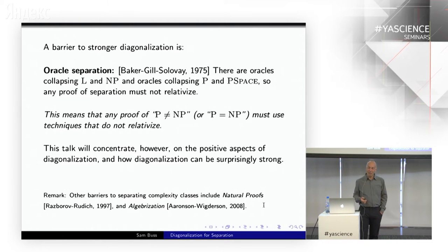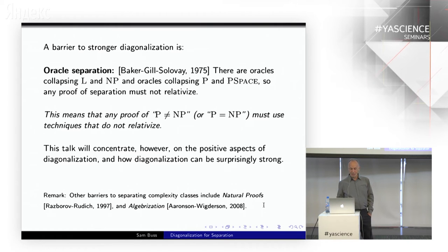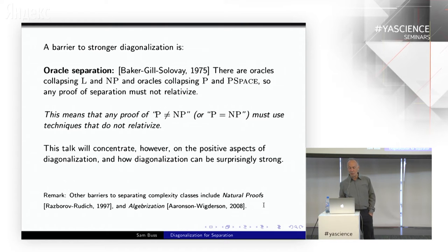In this talk, I want to concentrate on the positive aspects — what diagonalization is able to do. There have been some surprisingly strong results. In the interest of full disclosure, there are other barriers I'm not going to talk about: natural proofs and algebraization are the two other main classes of barriers towards proving separation results.